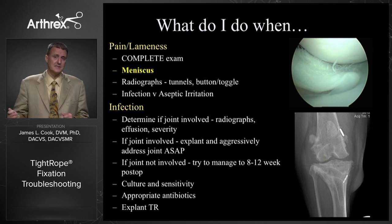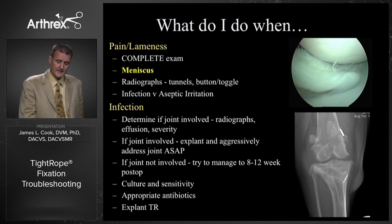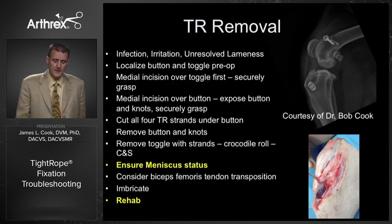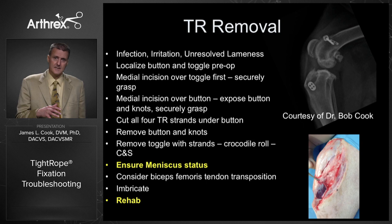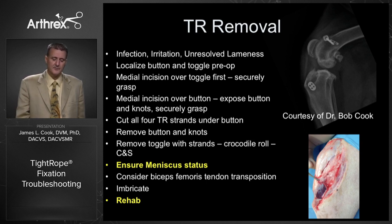If we can effectively manage until 12 weeks, then we would explant the Tightrope, still do all culture and sensitivity testing, and in that situation we're easily able to take the Tightrope out without having to do another stabilization procedure — which is great. If you can't do that, then be aggressive and get the Tightrope out right away, because it will become the nidus of infection and cause real long-term problems. The reasons to explant would be infection, long-term irritation, and unresolved lameness where you've checked the meniscus and just can't find another reason.